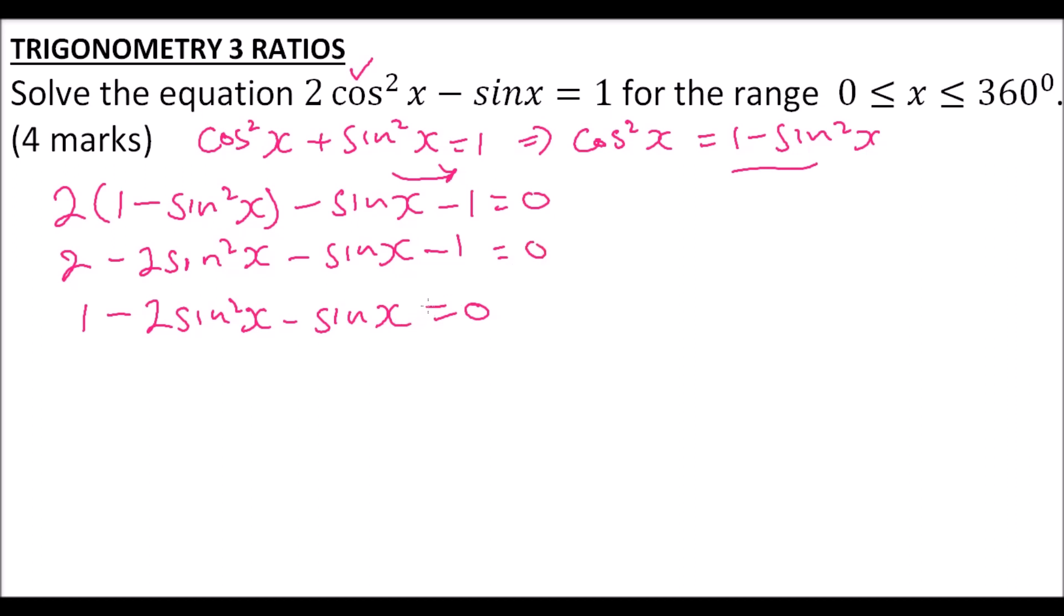To get rid of the minus sign, we take everything to the right-hand side. We have 2sin²x becomes positive, sinx becomes positive, and the one will be minus 1, equals to 0.